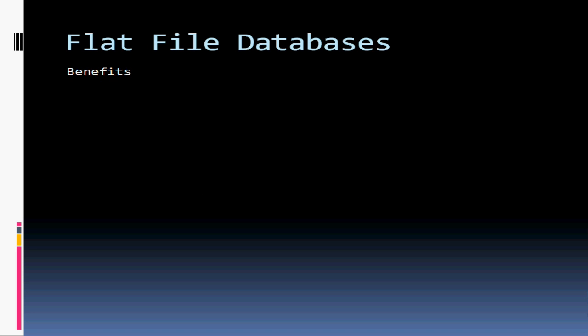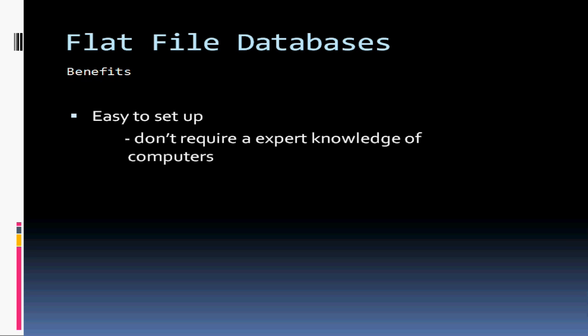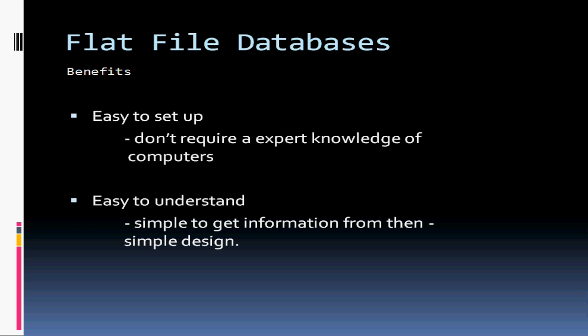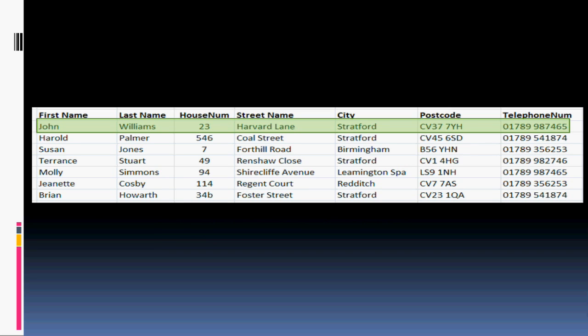Firstly, a flat file database is incredibly easy to set up, since all they are is a text list of information at their simplest, and at the most complex all they really are is a single table in a database or a spreadsheet. They're also very easy to understand and use after setup, as data is simply entered in the same way as the previous record. For example, if we were wanting to enter someone underneath John Williams here, we'd easily be able to see, without any particular training, that the first name went first, the second name went second, and so on — house number, street name. So it's very easy to enter information into a flat file database.